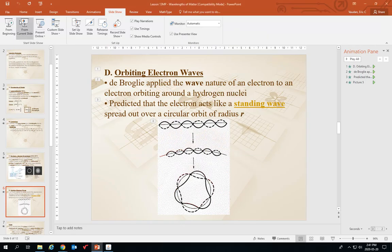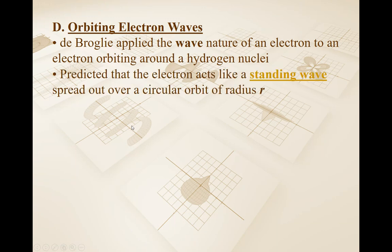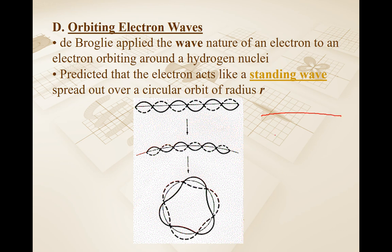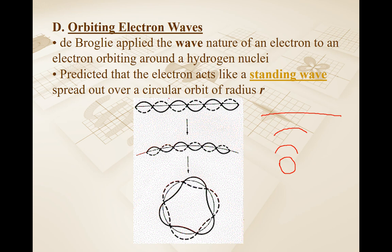Now that we've reviewed standing waves, let's apply this. The electron acts like a standing wave spread out over a circular orbit of radius r. Imagine you have a wire with a standing wave on it, and then you continuously bend that wire until you form a complete circle. In a particular orbit, we've essentially taken that — the electron is behaving like a standing wave — and if we bend it into the shape of an orbit, the electron behaves like a standing wave in that orbit.